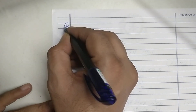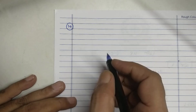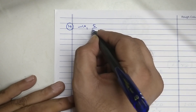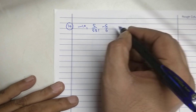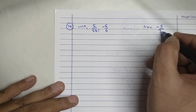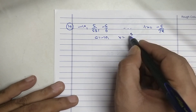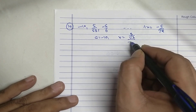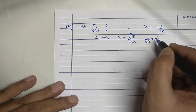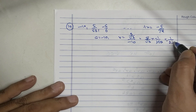Sum number 10. The given GP terms are minus 10, phi upon root 3, minus phi upon 6, and Tn is given as minus phi upon 72. A equals minus 10. R equals (phi upon root 3) divided by minus 10, which equals phi upon root 3 into minus 1 upon 10, equal to minus 1 upon 2 root 3.